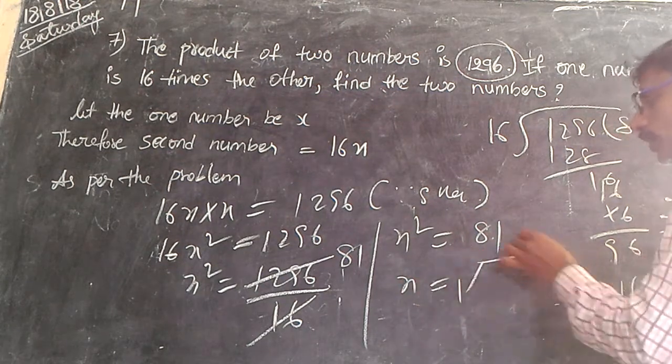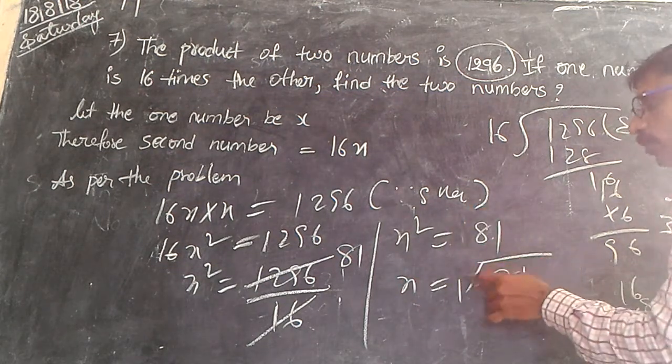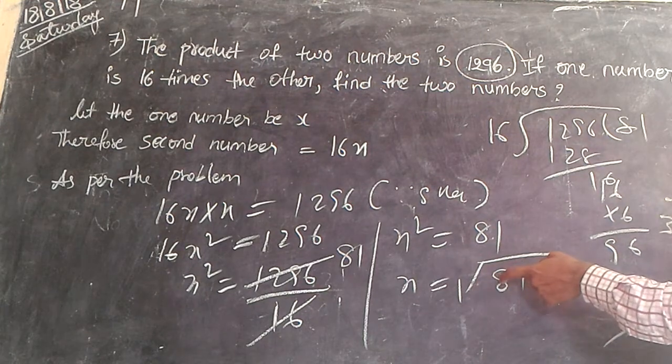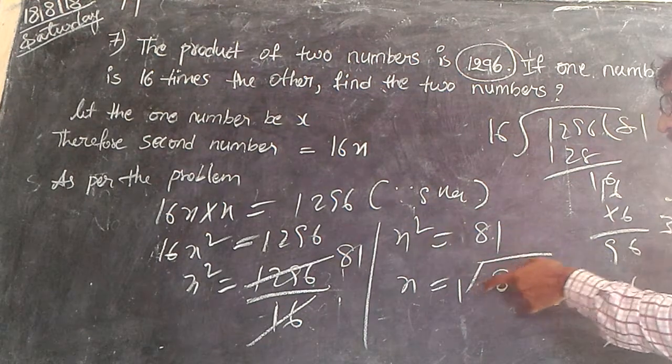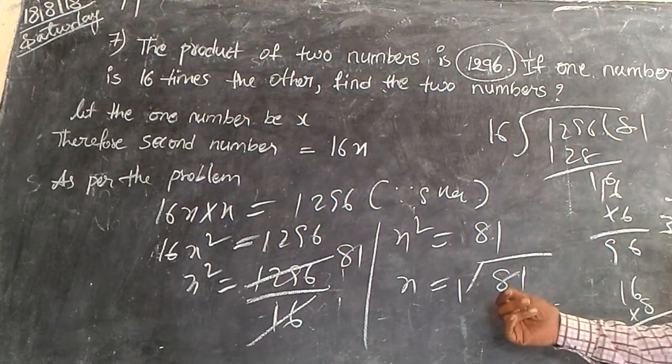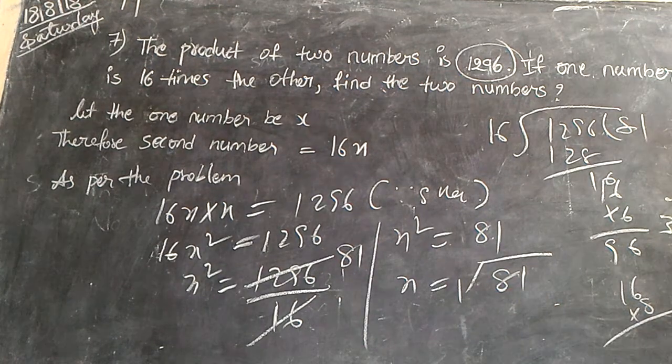Therefore, x is equal to square root of 81. I told you this is the symbol of square root. When you remove the square root, you can keep square root. This is the square root. It is the symbol.